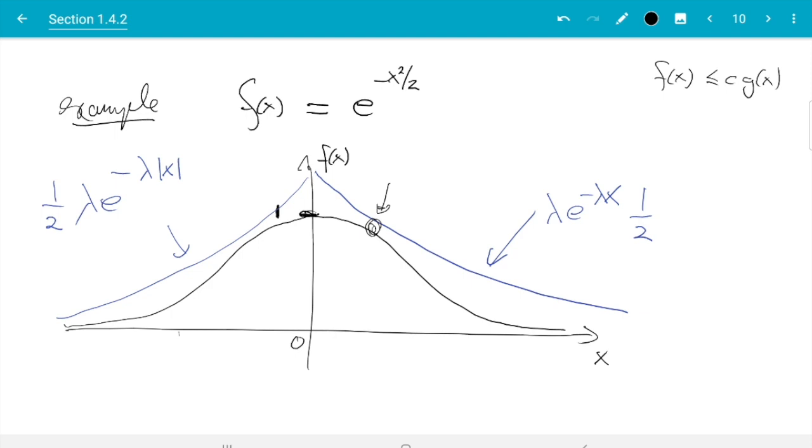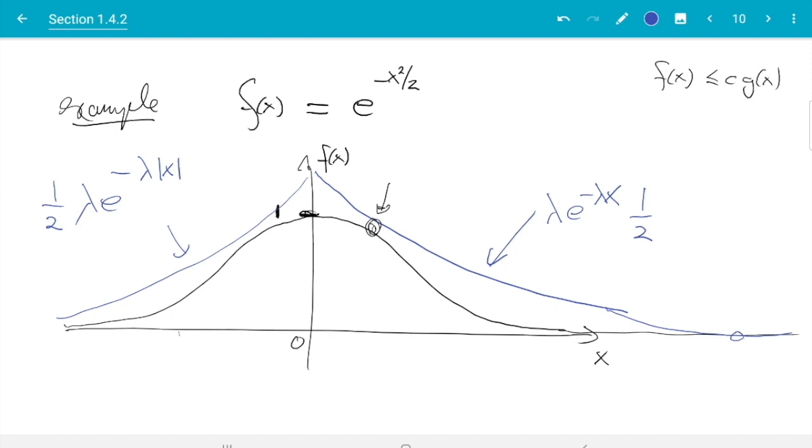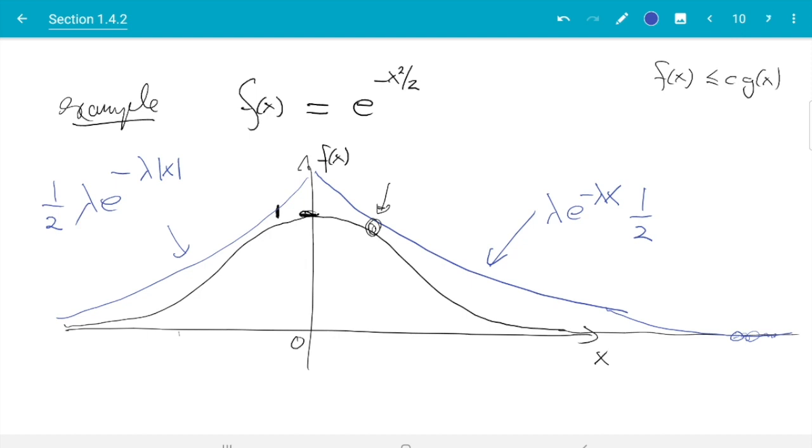Namely, for x to infinity, the curve f will go to zero and g will go to zero. So in this plot, if we go further out, the curves will look the same, but still we need that f ≤ cg. So we need to say something about the behavior of f and g as they both go to infinity. And what we need here is a distribution g which has what is called heavier tails than f.